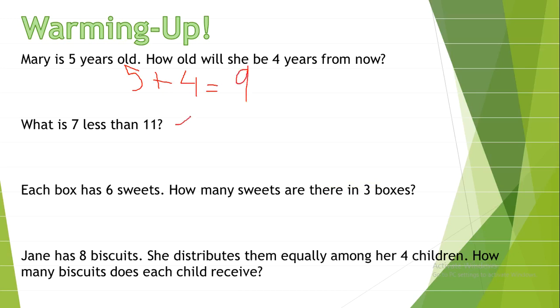What is 7 less than 11? So, 11 minus 7 equals 3. Each box has 6 sweets. How many sweets are there in 3 boxes? So, 3 times 6 equals 18 sweets.